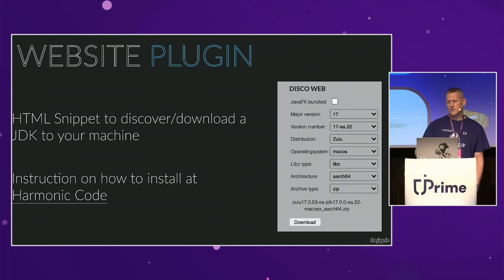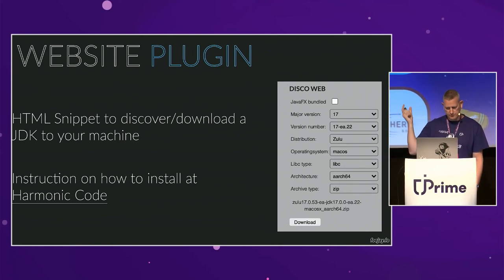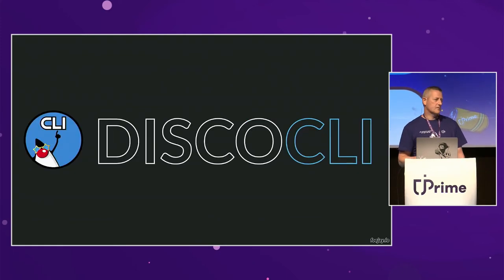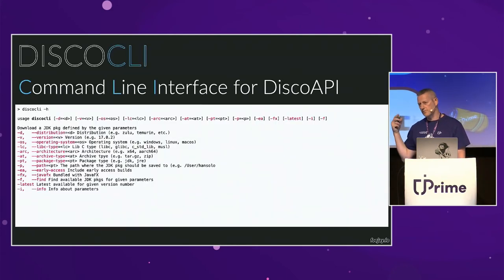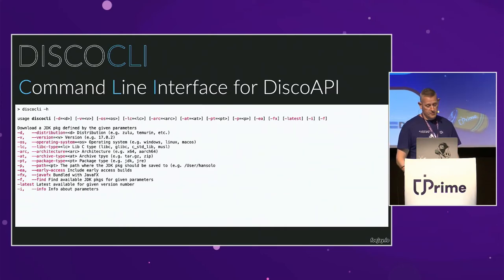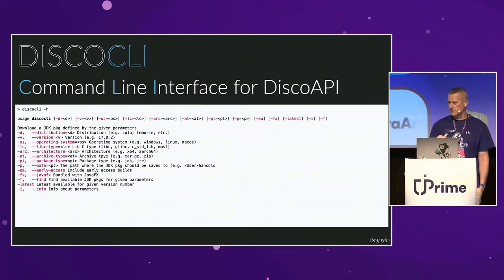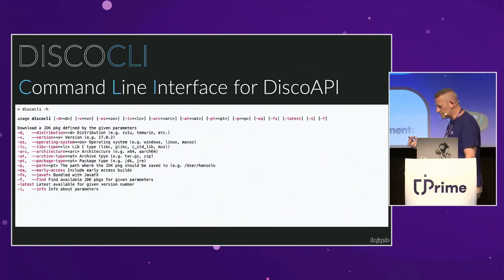I also created a JavaScript snippet you can add to your blog — just one piece of JavaScript that shows the same JDK selector widget. There's also a CLI, a command line interface for the API, available as a binary for Linux, Mac, and Windows. It was built using GraalVM Native Image, so it's just one file. You can select a distribution, version, JavaFX bundling preference, and it downloads directly to your hard drive — useful in CI/CD systems with batch files or scripts.